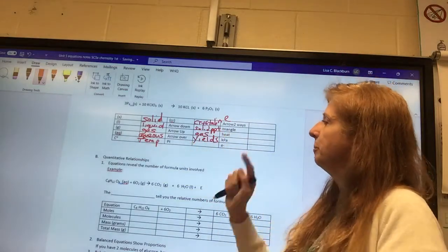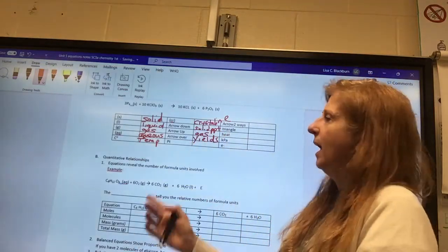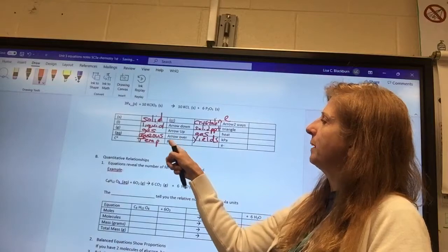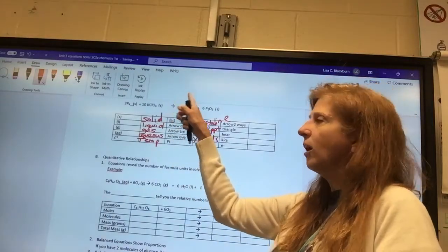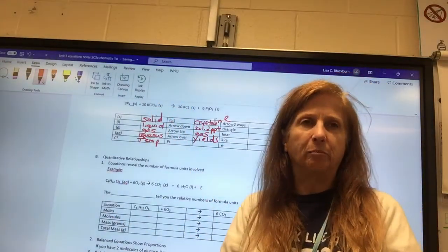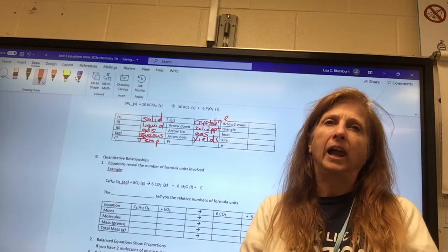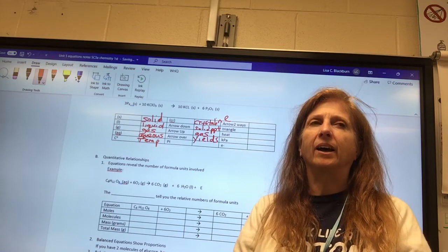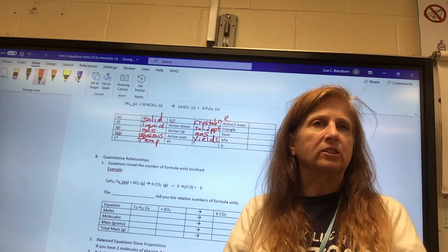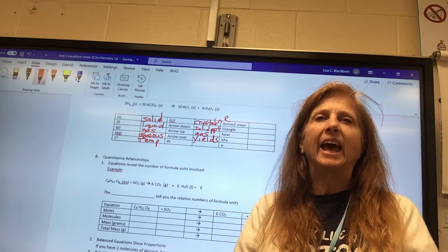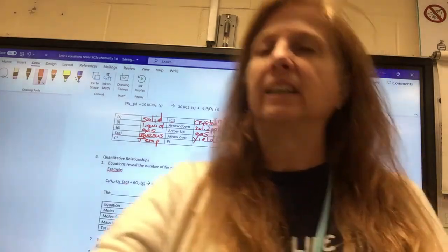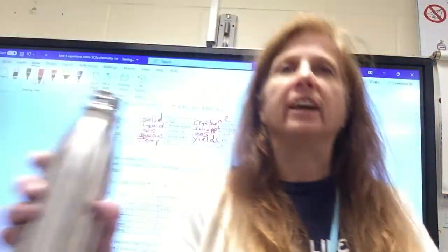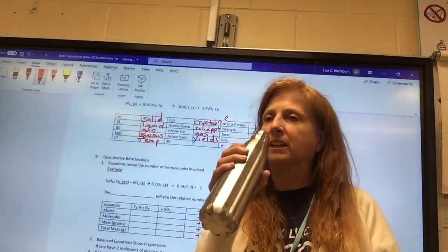The next one, PT, is platinum, and this would be some chemical written on the arrow, and it's often platinum. Any guess what that one could be for? You might have learned about this in physical science. It is a catalyst. Have you heard of a catalyst? Did you hear about in biology that in your body enzymes are catalysts?